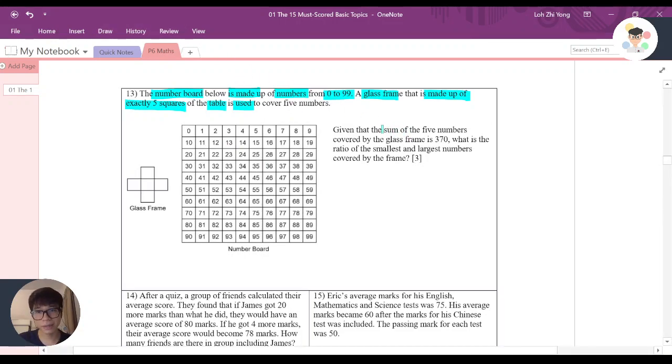And here continue to say this one, given that the sum of the 5 number covered by the glass frame is 370. Now, what is the ratio of the smallest and the largest number covered by the frame?